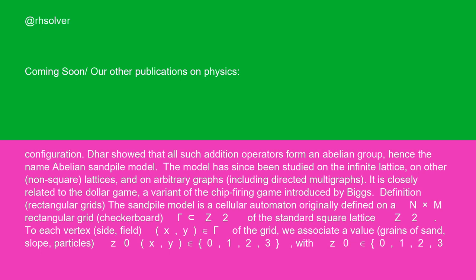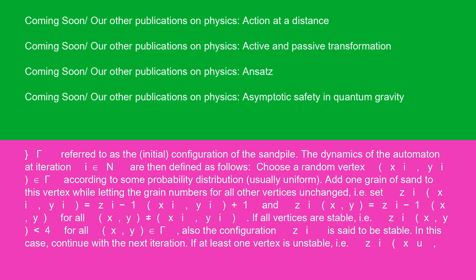Definition: Rectangular grids. The sandpile model is a cellular automaton originally defined on an N×M rectangular grid — a checkerboard — gamma, a subset of Z², of the standard square lattice Z². To each vertex (site) (x, y) that is an element of gamma of the grid, we associate a value — grains of sand, slope, particles — Z₀(x, y), which is an element of {0, 1, 2, 3}, with Z₀ an element of {0, 1, 2, 3}. Gamma is referred to as the initial configuration of the sandpile.